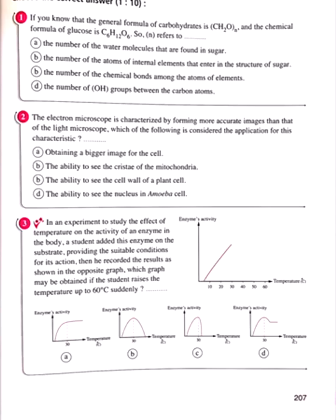The next question asks why the electron microscope sees better than the light microscope. Option A — obtaining a bigger image of the cell — doesn't work for the electron microscope. Option B — the ability to see the cristae of the mitochondria — this is scientifically valid. The light microscope can only see the cell wall of a plant cell or the nucleus of an amoeba cell, but seeing the cristae of the mitochondria requires the electron microscope because that is the inner membrane.